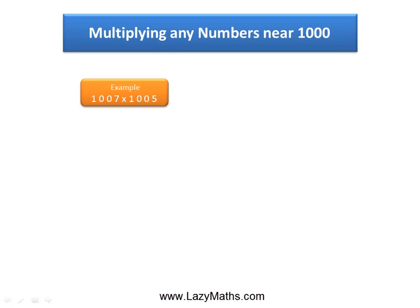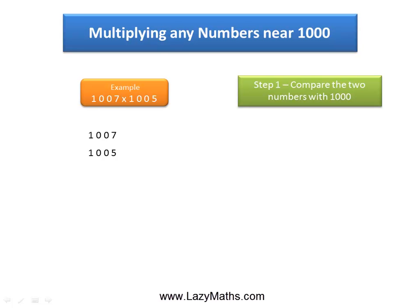Here is an example of multiplying any numbers near 1000. The problem is 1007 times 1005. Since both these numbers are close to 1000, our first step is to compare them to 1000.